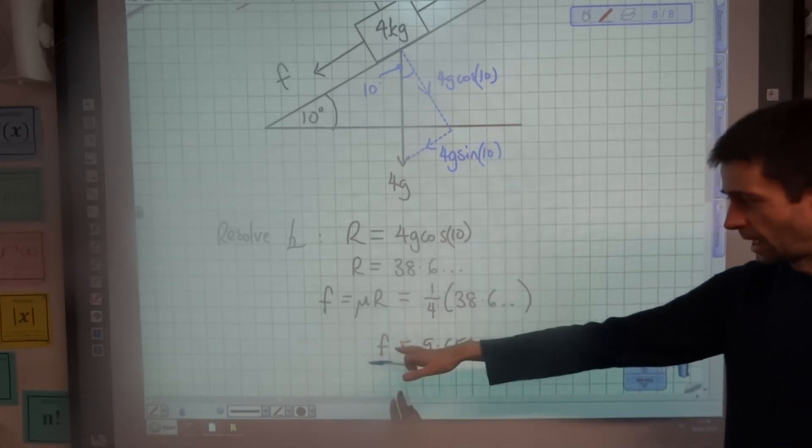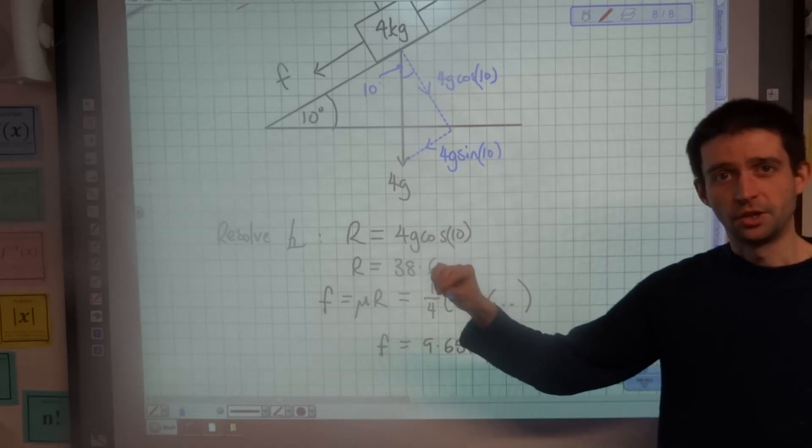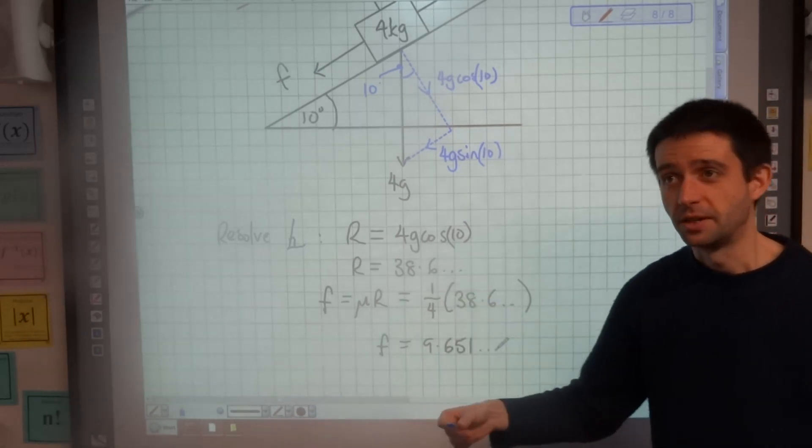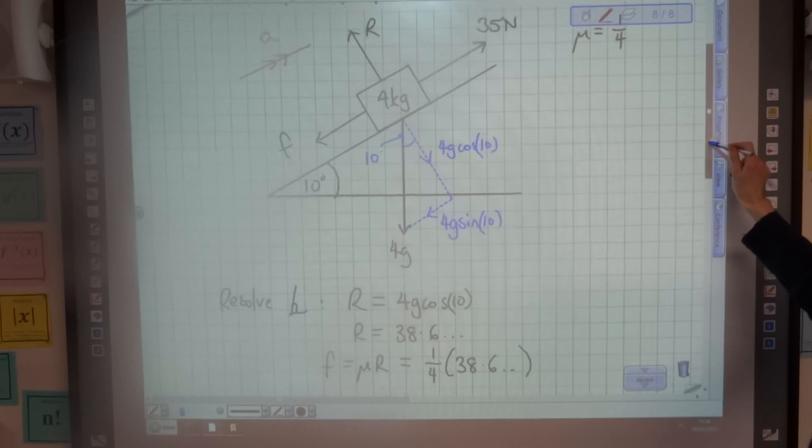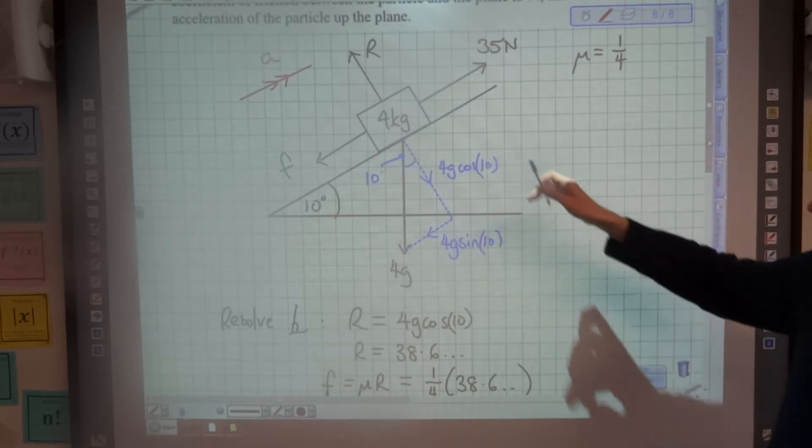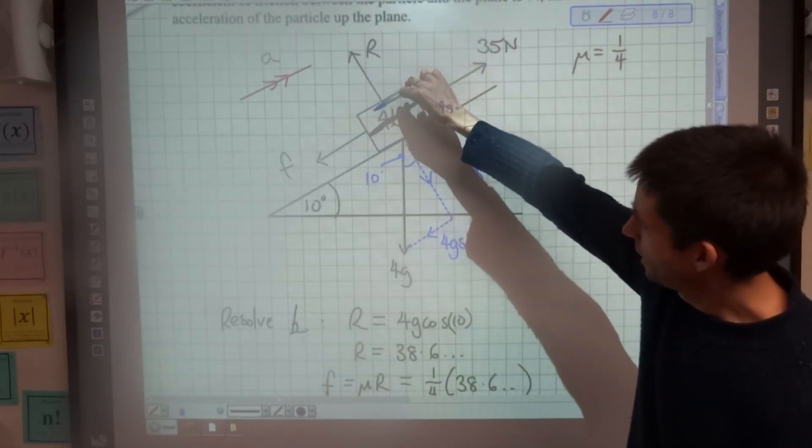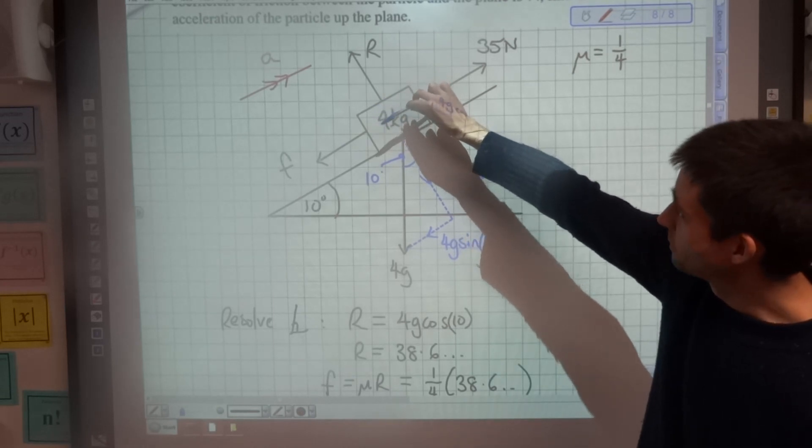So now I've resolved perpendicular and I've found the value of friction, I'm ready to resolve parallel to the plane to find out the acceleration. Now remember what I said about taking a ruler straight edge and just sliding parallel to the plane and taking into account all these forces.